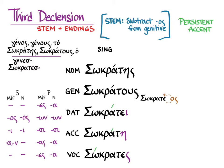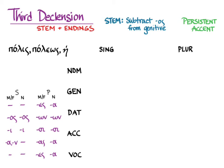The accent is persistent, and so here is how it looks. The exception, of course, is the vocative, which often has a very recessive accent. Moving on to nouns of the type πόλις, πόλεως — again, we cannot use the usual rule of subtracting -os from the genitive to find the stem for all cases and numbers. With πόλις, what we have is a combination of several different stems: a πολι- version, a πολε- version, and a πολη- version. Essentially, you have to learn this declension.